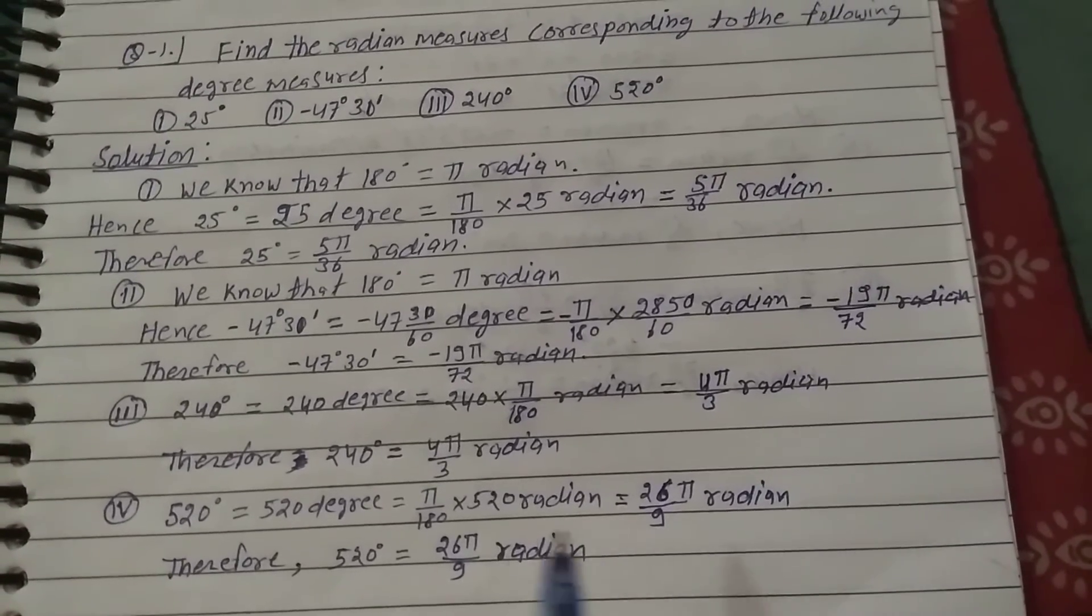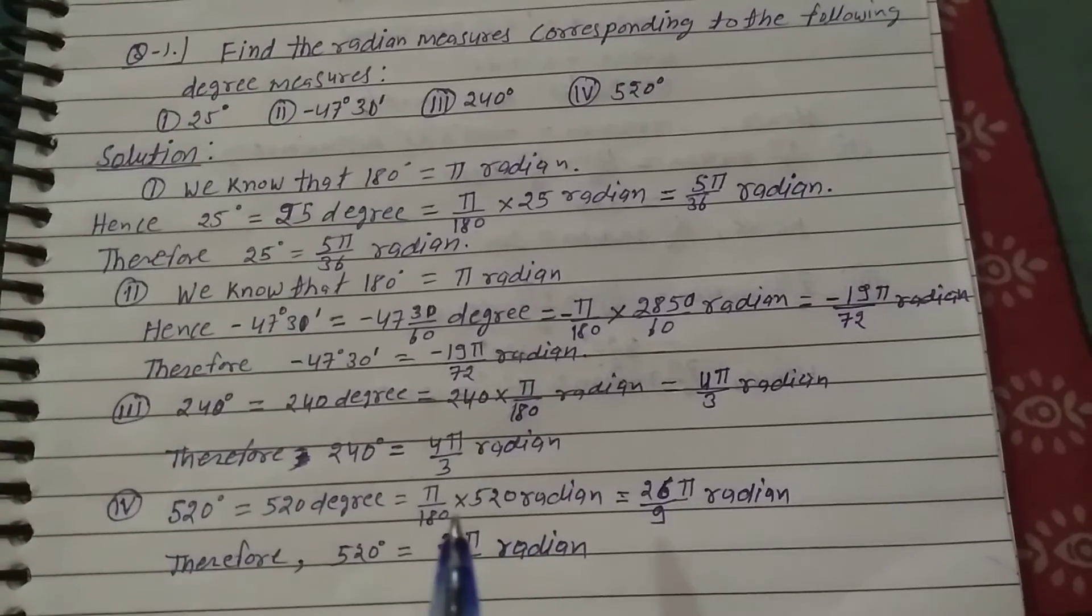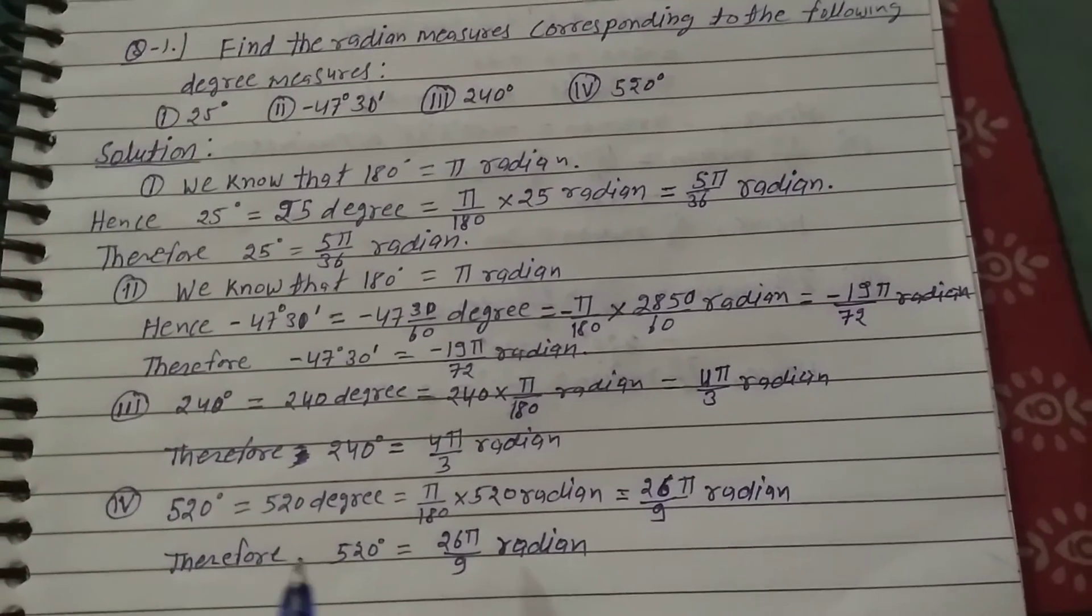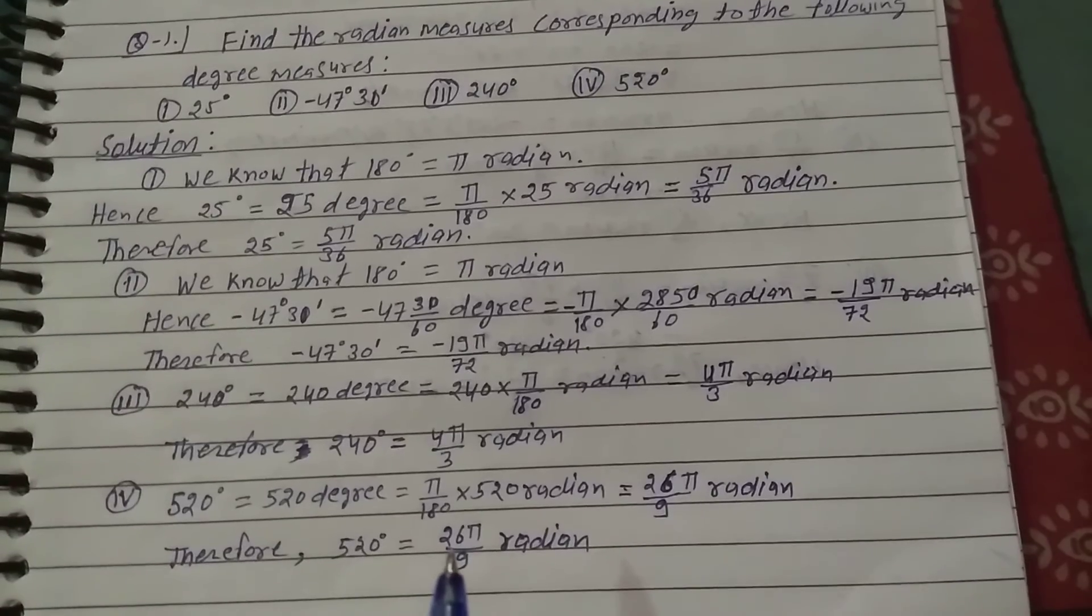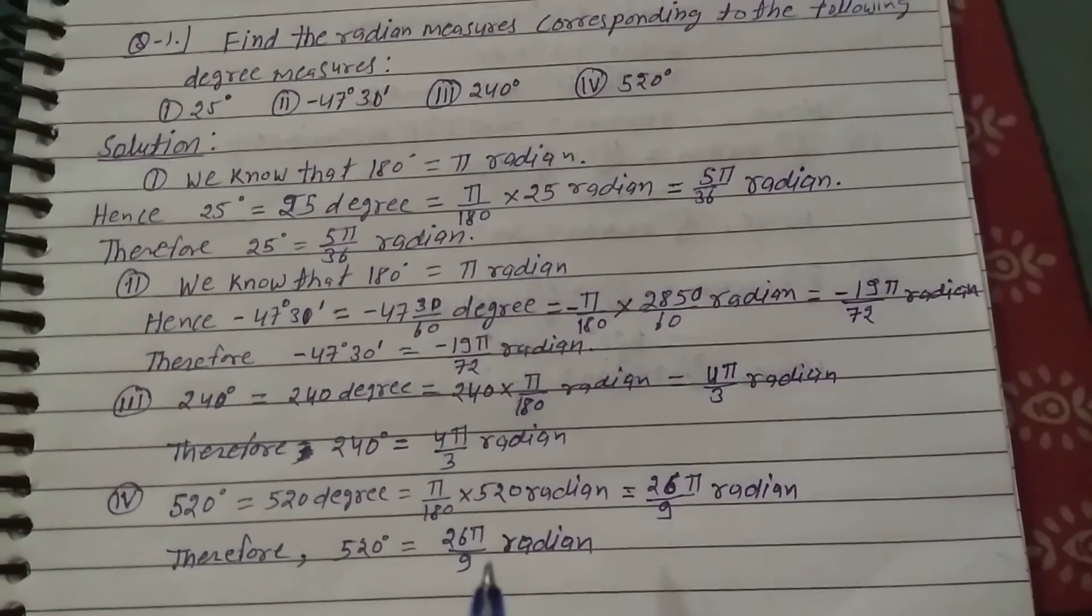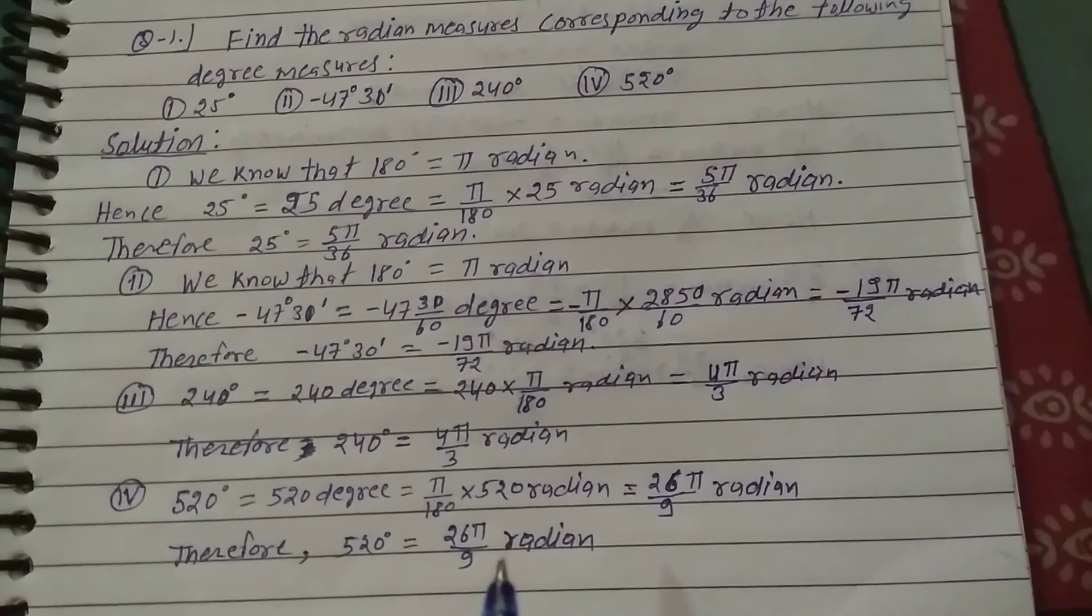...26π/9 radians. This is the simplest form. Therefore, 520 degrees equals 26π/9 radians.